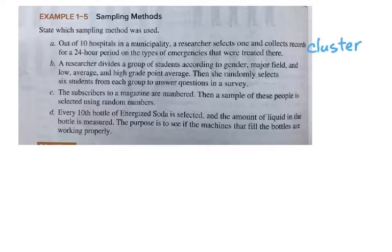In Part B, a researcher divides a group of students according to their gender, major field, and low, average, or high grade point average. Then she randomly selects six students from each group to answer questions in a survey. What is this? If you were thinking stratified sampling, you would have been correct.